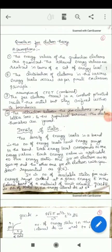the energy values of conduction electrons are quantized and the allowed energy values are realized in terms of a set of energy levels. The distribution of electrons in the various energy levels is as per Pauli's exclusion principle.